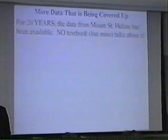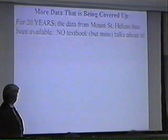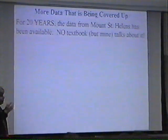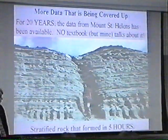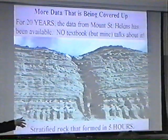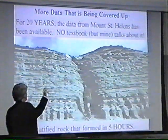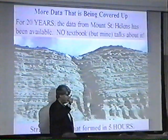This is the interesting stuff in science — the stuff you can't explain — but unfortunately it's mostly covered up because it goes against the evolutionary paradigm. You can also cover up data that you don't completely understand because you're afraid it might affect your hypothesis. For example, the Mount St. Helens eruption took place nearly 20 years ago, but no textbook — except for mine — seems to talk about it in any depth.